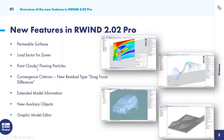The next feature is the convergence criterion. Currently we stop the calculation after a certain drop of pressure — when the difference from the latest iteration reaches a certain value. Since this is not suitable for every stationary calculation, we added a new type based on the drag force difference on the model. We also added extended model information, so you can right-click on your model and get information about the area and other useful details.